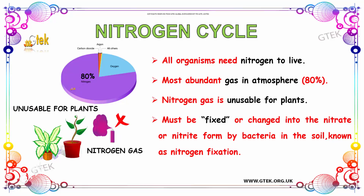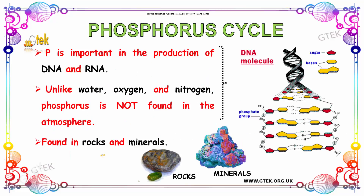You can see the nitrogen formation and plants — nitrogen gas is shown here. Now let us talk about the phosphorus cycle. Phosphorus is important in the production of DNA and RNA. Unlike water, oxygen, and nitrogen, phosphorus is not found in the atmosphere — it is found in rocks and minerals, depicted here.